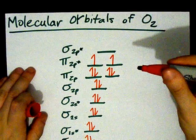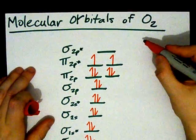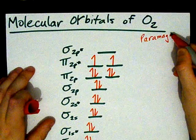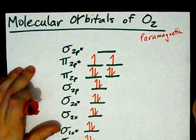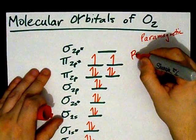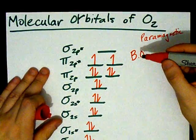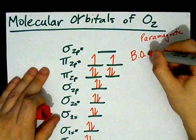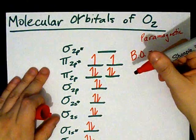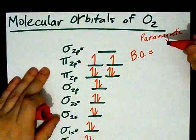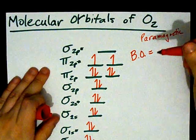Now, it is a paramagnetic molecule because we have unpaired electrons. Another question you could be asked is, what's the bond order? And then I think you cut it in half, but let's find it.